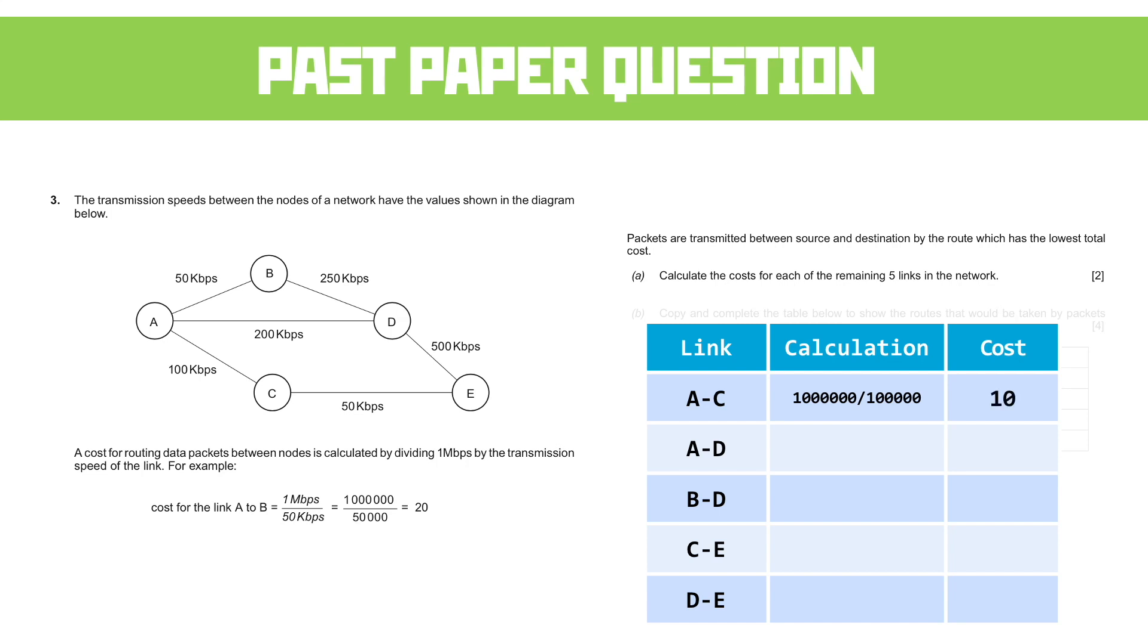A to D, then, is a million divided by 200,000, which gives us a cost of 5. B to D is a million divided by 250,000, giving us a cost of 4.